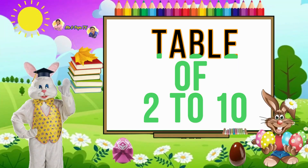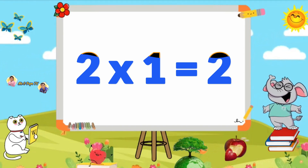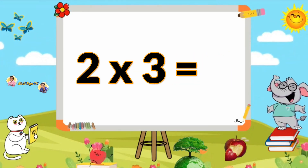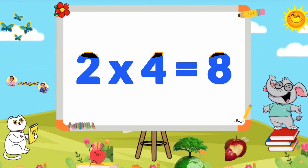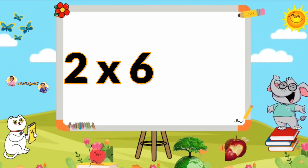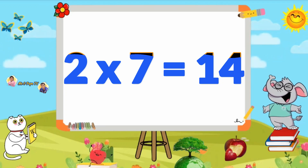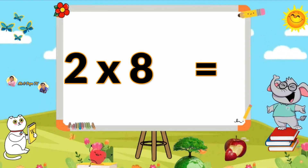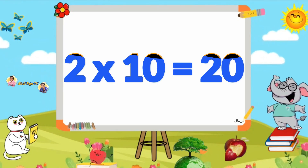Learn Table of 2. 2×1=2, 2×2=4, 2×3=6, 2×4=8, 2×5=10, 2×6=12, 2×7=14, 2×8=16, 2×9=18, 2×10=20.